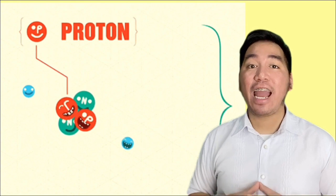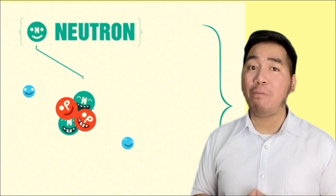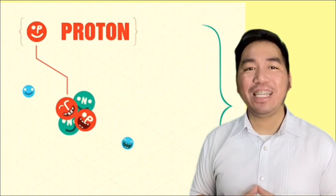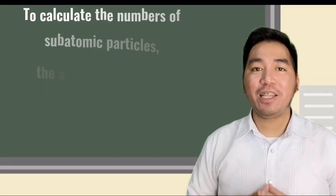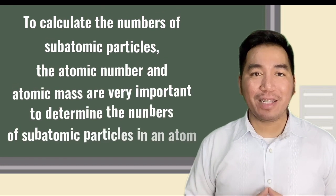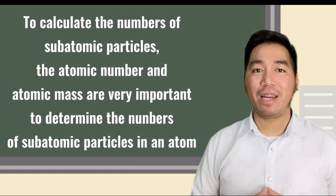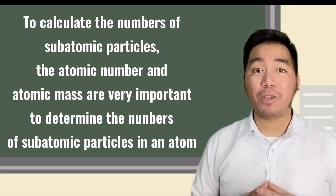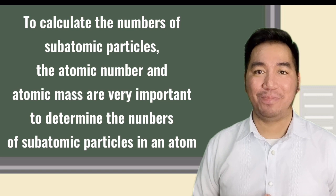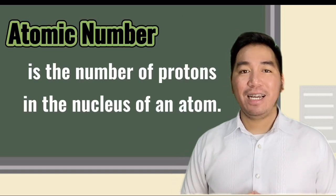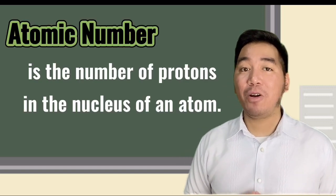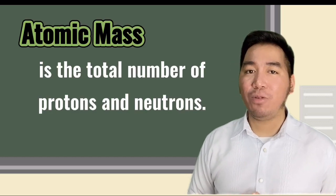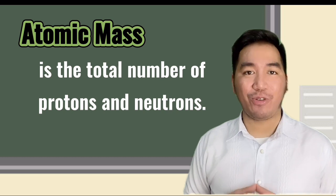Now, let us study how to determine and figure out the number of protons, neutrons, and electrons on each element. To calculate the numbers of subatomic particles, the atomic number and atomic mass are very important to determine the numbers of the subatomic particles in an atom. As I mentioned a while ago, the atomic number is the number of protons in the nucleus of an atom. An atomic mass is the total number of protons and neutrons.